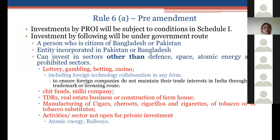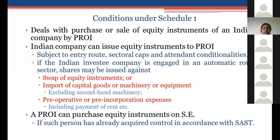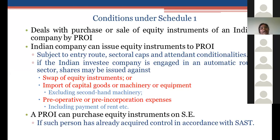Pre-amendment, investments from Pakistan and Bangladesh were subject to approval route; they could only invest in sectors other than defence, atomic energy, and prohibited sectors. Post-amendment, the restriction is extended to all countries sharing a land border with India. If an Indian company intends to issue shares to an entity belonging to a land-border country, it can do so only under the approval route, as it must comply with entry route and sectoral conditions under Schedule 1.